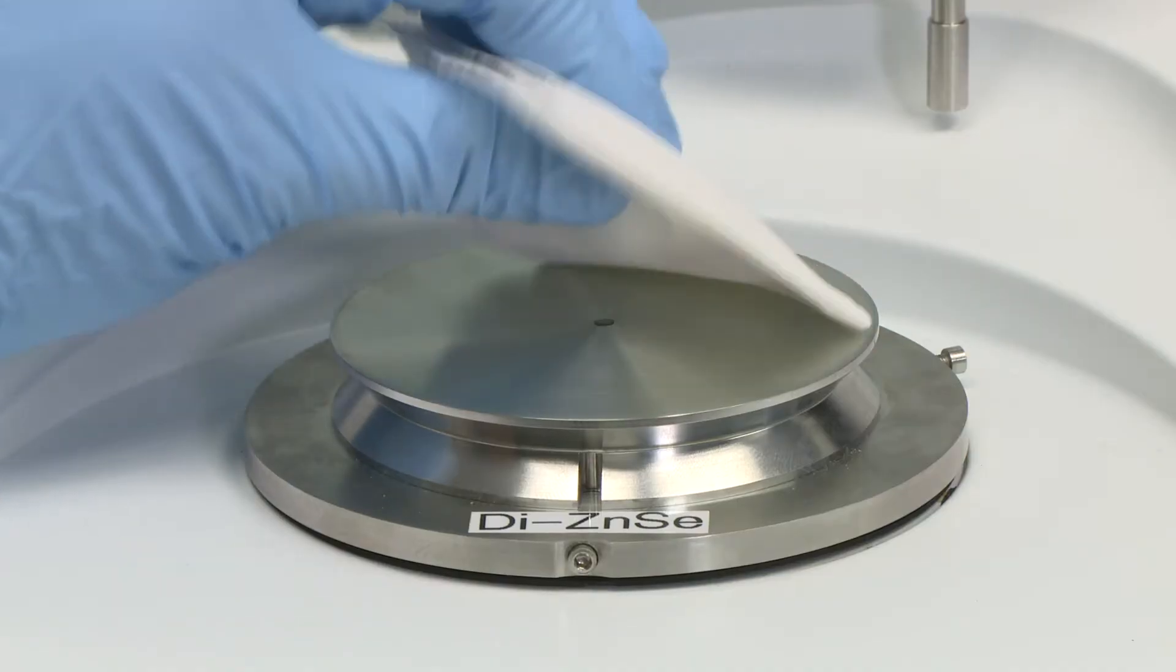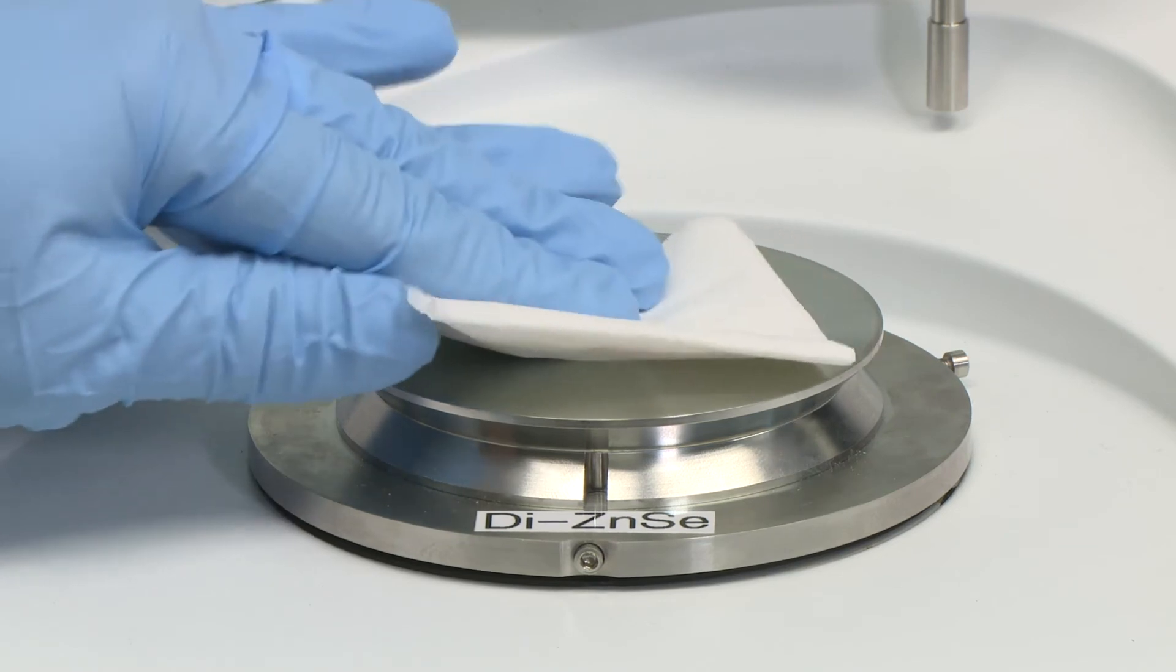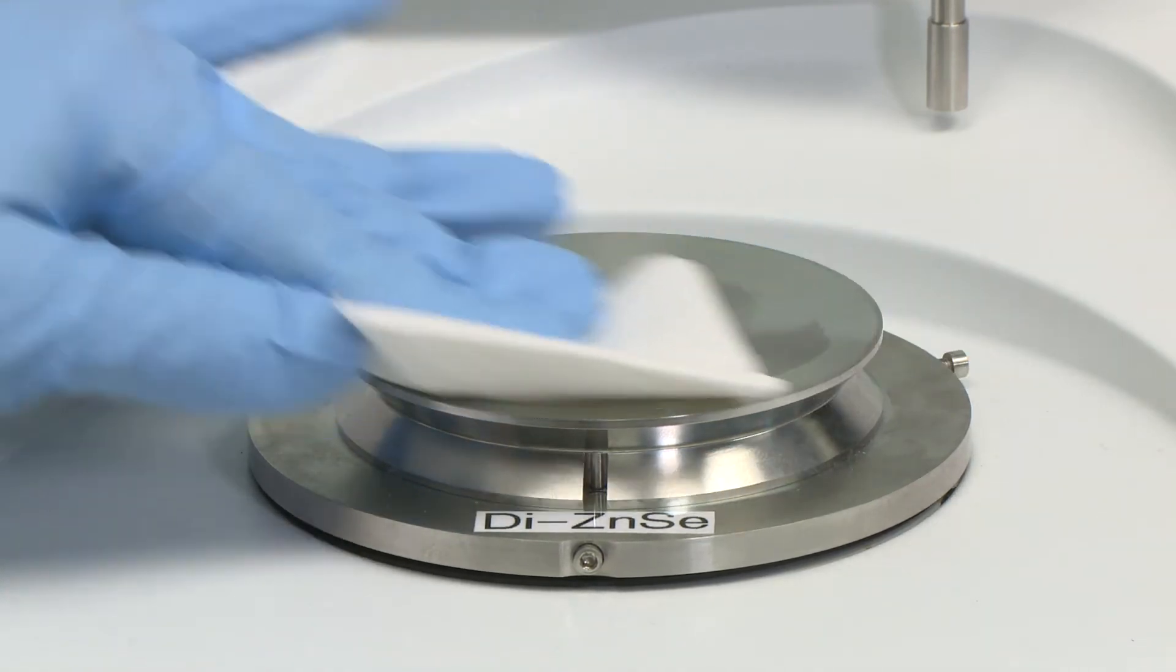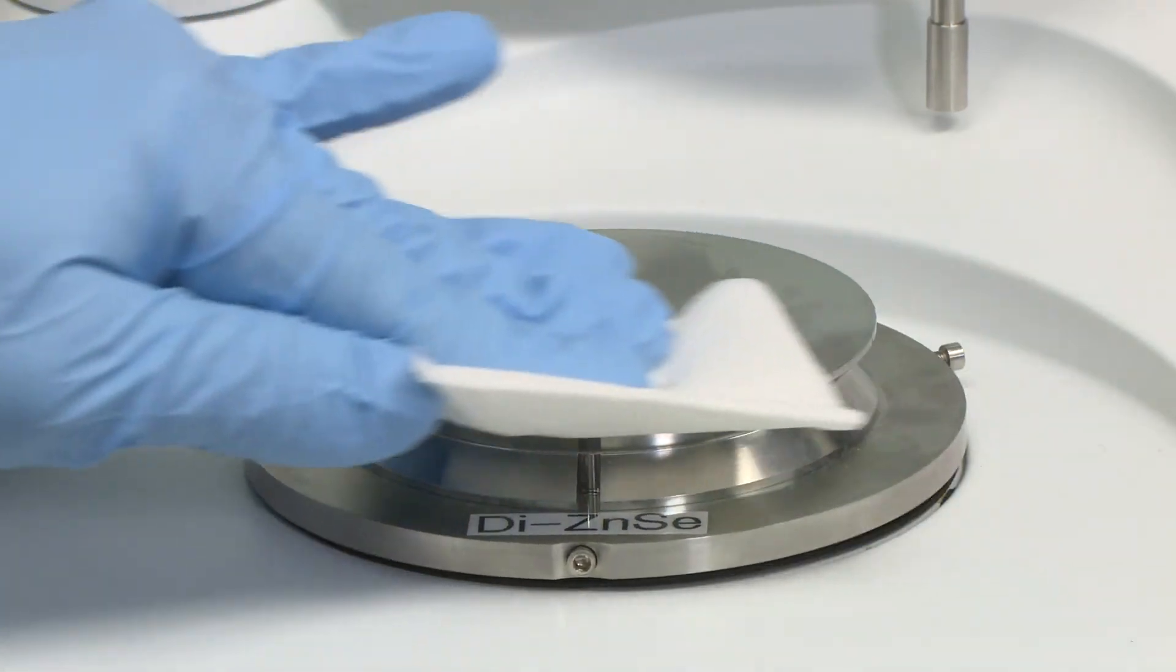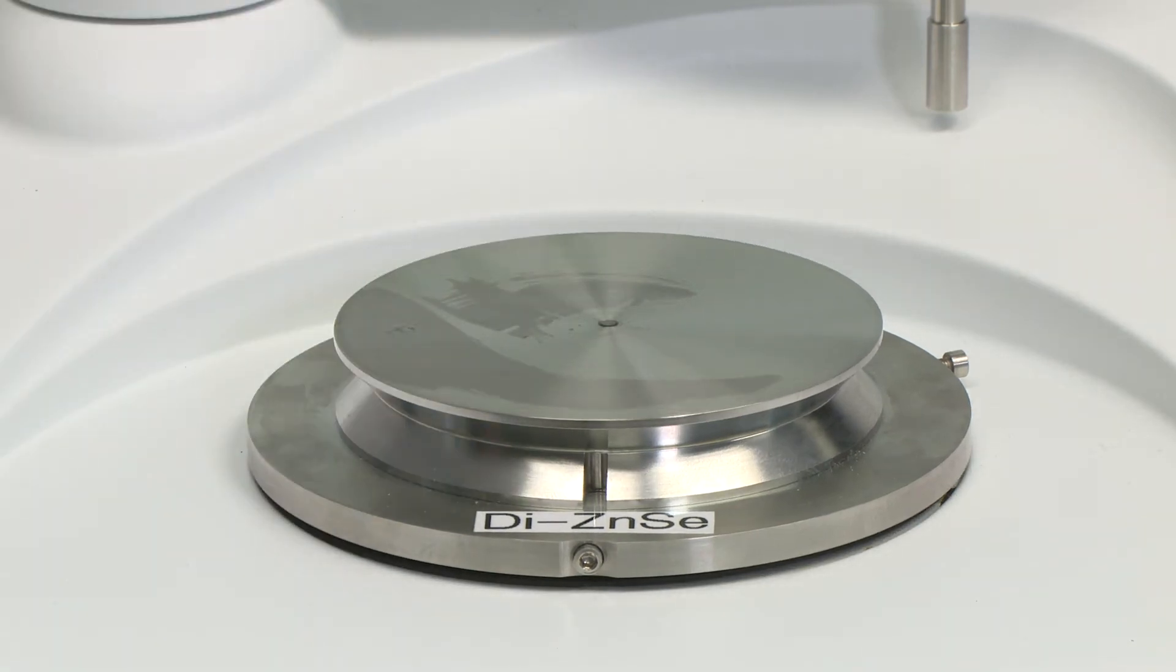You're going to want to clean the crystal in an outward fashion, so start in the middle and do a circular outward fashion. This pushes any kind of sample that may have been on the crystal to the outside of that crystal.